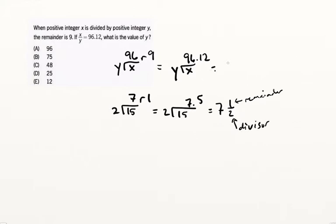So what we could do is we could just as easily write this as 96 and remainder, 9, over divisor, y. So notice what I've done is the 15 and the 2, they have nothing to do directly with the 96 and the 9 and all this stuff.